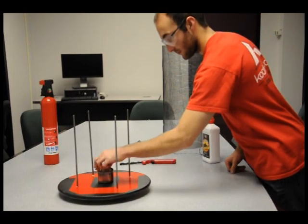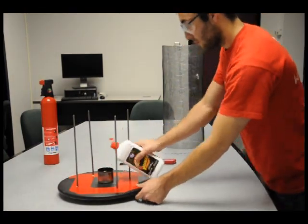First we place the rag inside the tin can. Then we soak the rag with lighter fluid.